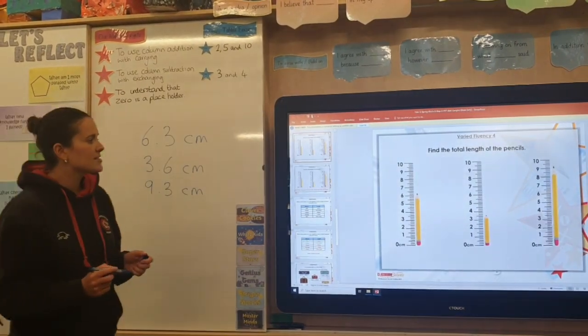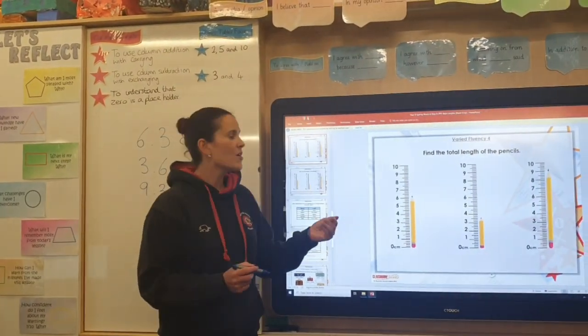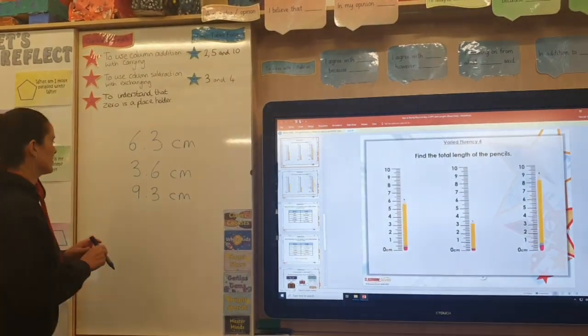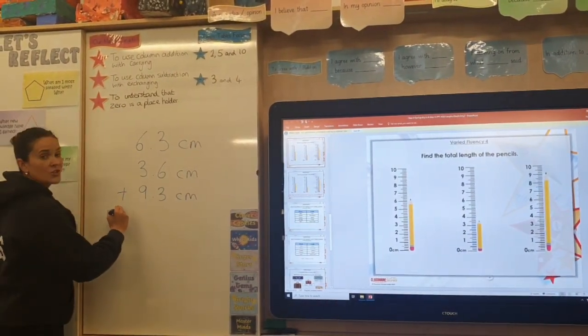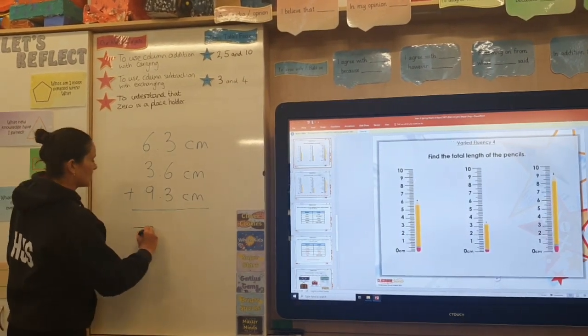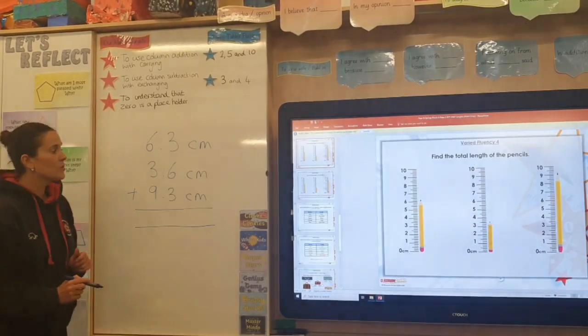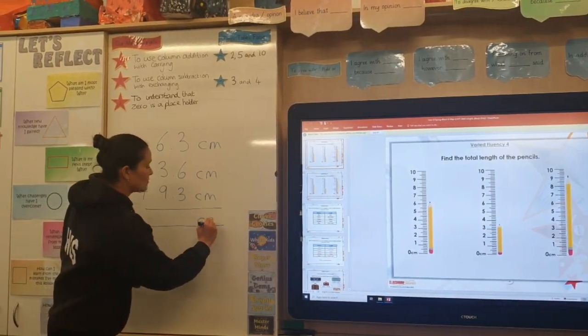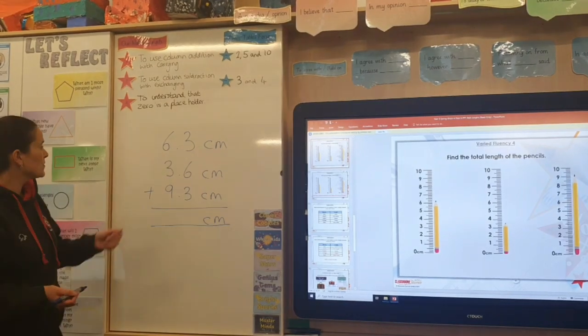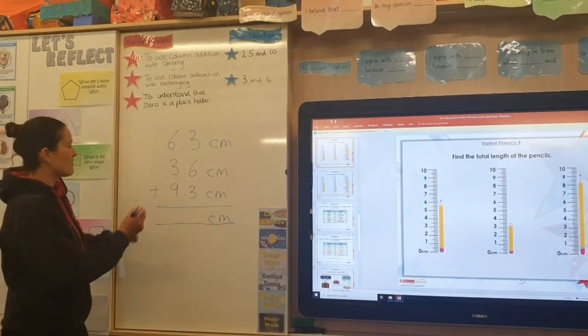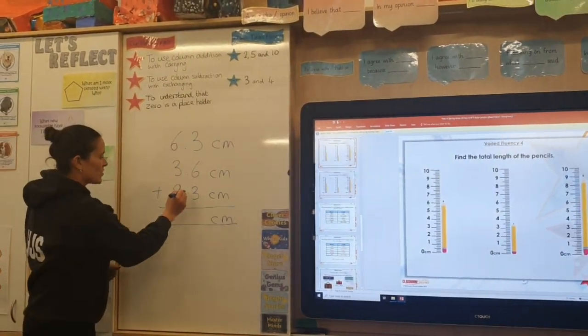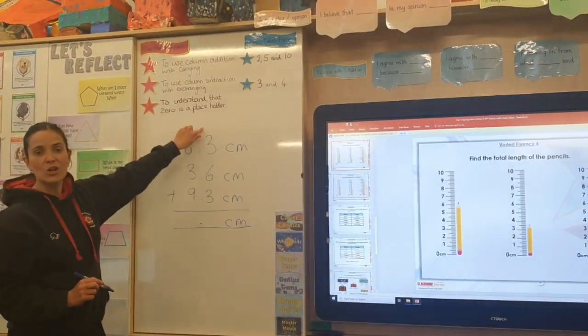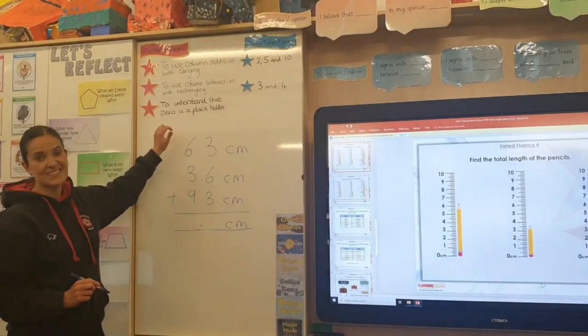Once we've worked out how long each of those pencils is, we need to add them all together to find the total length. So we can just do our normal addition calculation that we would normally do. You can have the centimetres on the end to start with, or you can leave them off and add it on at the end. That's no problem. You also need to make sure that you have your decimal points in a straight line in the answer box there. And then we start with the column on the right hand side. In this case, it's the tenths column.